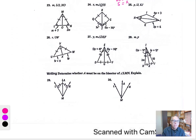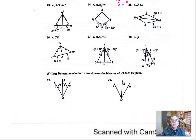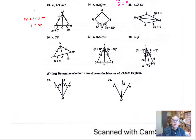Let's look at number 23 and find M. These two segments are congruent to each other since we have a perpendicular bisector, so M plus 1 equals 2M. Taking M away from both sides gives M equals 1. LO is then 1 plus 1, which is 2. NO is twice 1, which is also 2, and M equals 1.